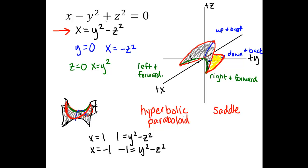If I plug in x equals negative 1, I get negative 1 equals y squared minus z squared. Dividing through by negative 1 to get standard form gives 1 equals z squared minus y squared — it changes the signs on the right side. So back at x equals negative 1, I would have hyperbolas that open in the z direction with z-intercepts at plus and minus 1, on the back flap of my little Pringles chip. Those hyperbolas are a little bit difficult to see. If you're in class the day I bring Pringles, we'll actually draw on some Pringles so you can see them better.